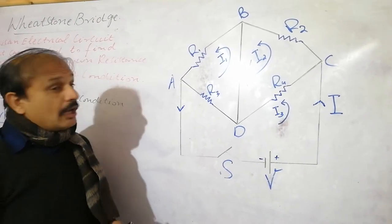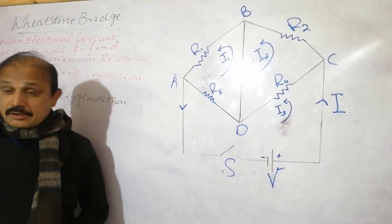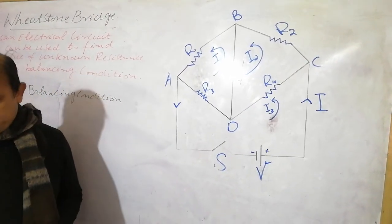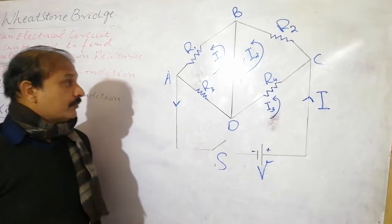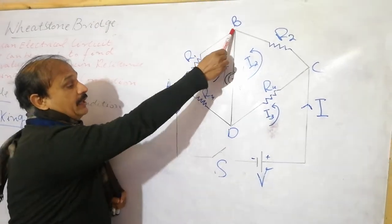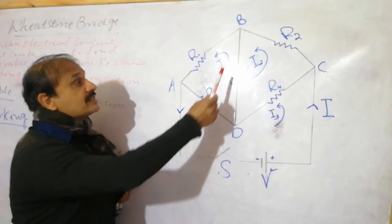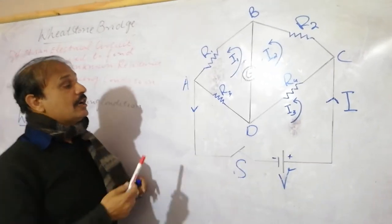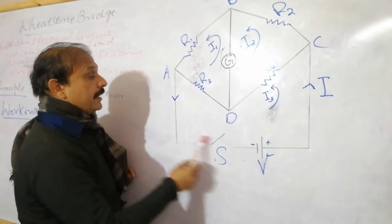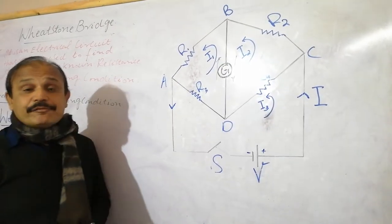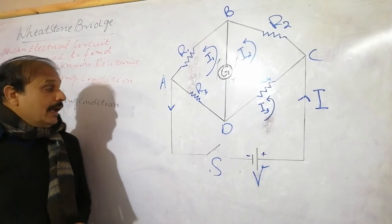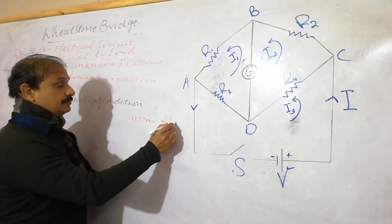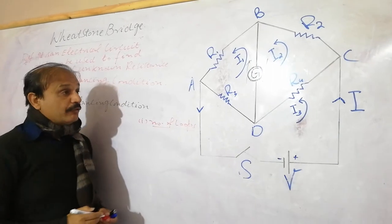Now the working — that's a very important point. The working involves two steps. Step number one is to mention the number of loops. We have three loops: the first one is A-B-D-A, the second one is B-C-D-B, and the third one is A-D-C-A. So allocating the number of loops is the first step.